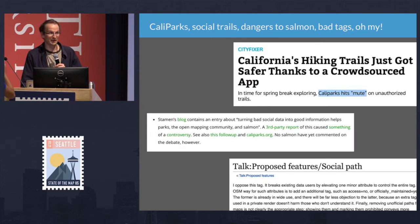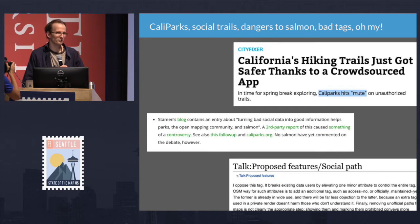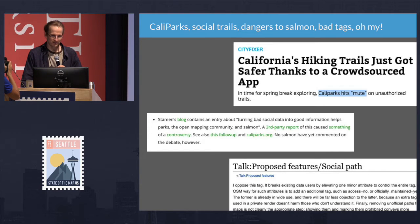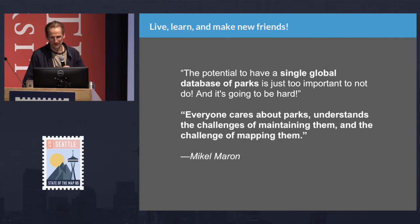A phrase like 'Kelly Parks hits mute on unauthorized trails' became a center of controversy. Ultimately, this social path tag wasn't a great idea and wasn't accepted.